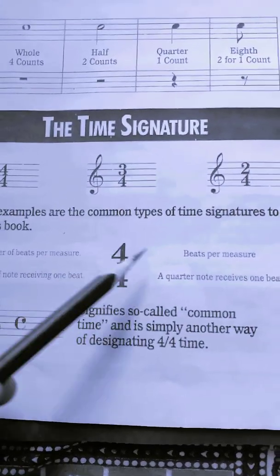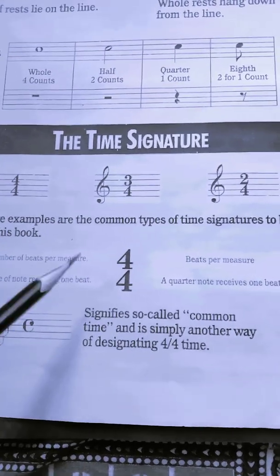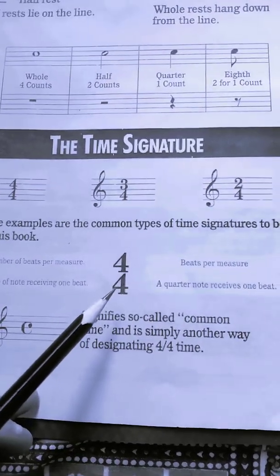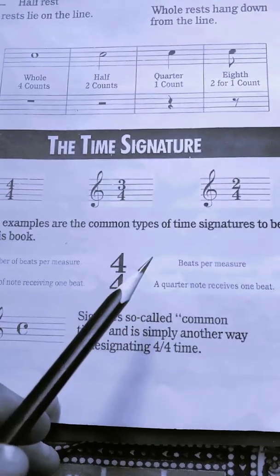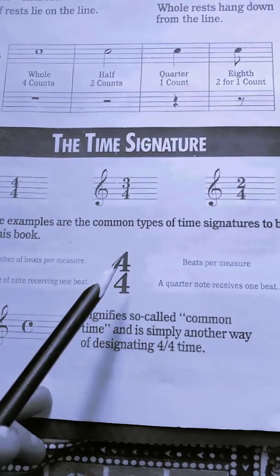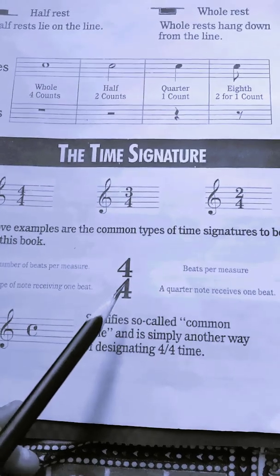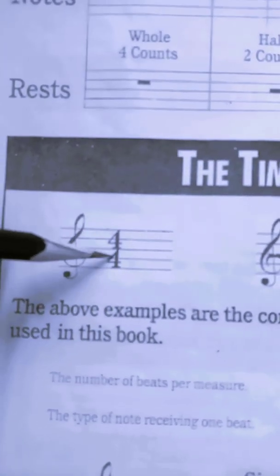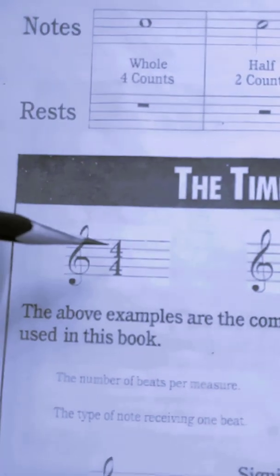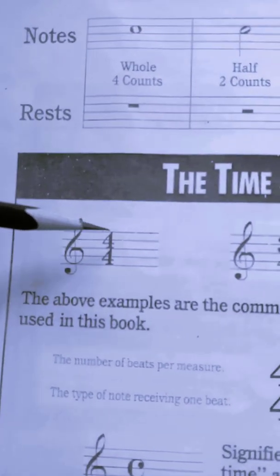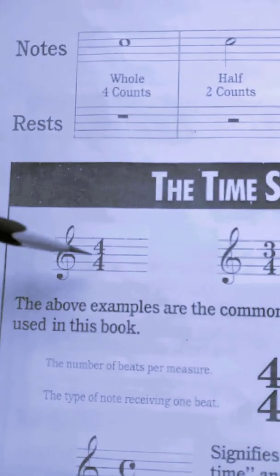So a time signature has a fraction. The top number implies the number of beats in one measure. The bottom number — the denominator — explains how many notes will be received on one beat. So this four here implies there are four beats per measure, and the bottom number four implies that a quarter note receives one beat. You can simplify it to saying there are four quarter notes in a measure.